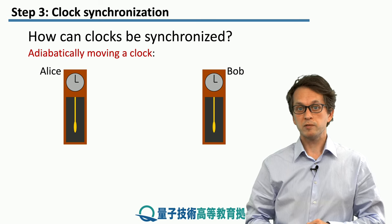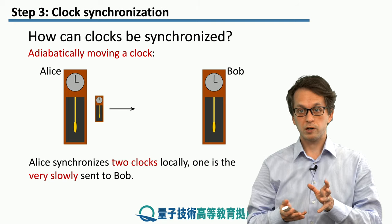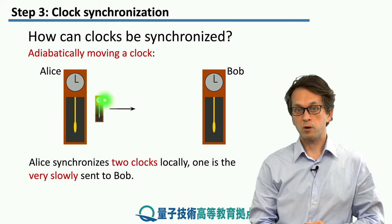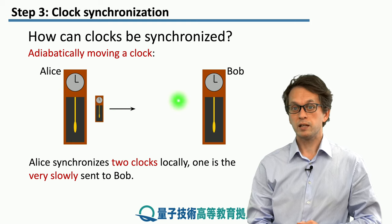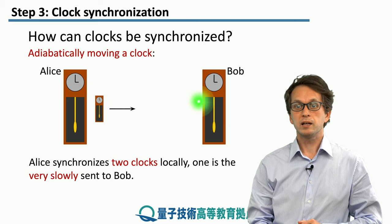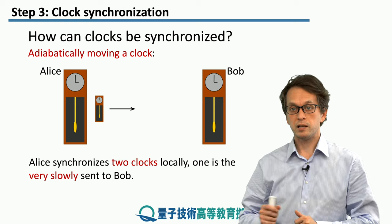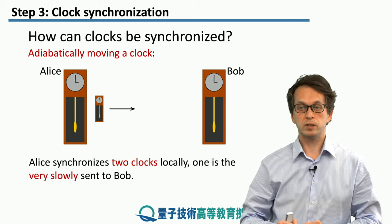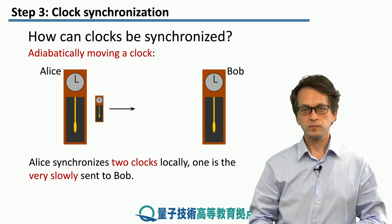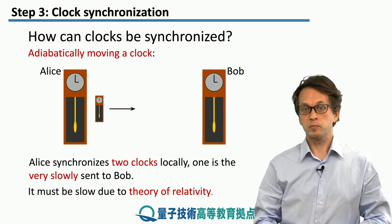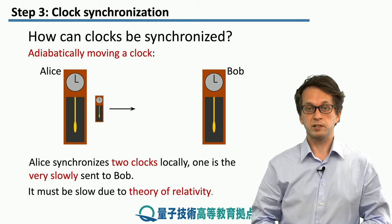A different scheme is for Alice to have a smaller clock, which she synchronizes locally with her own clock. That small clock is then very slowly — in fact, adiabatically slowly — transferred to Bob, where he receives it and can locally synchronize his clock with the received clock. This must be done adiabatically slowly because of the theory of relativity.